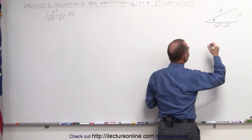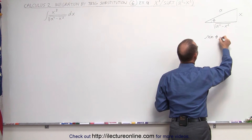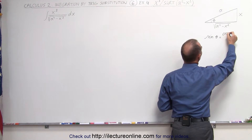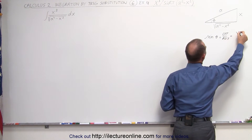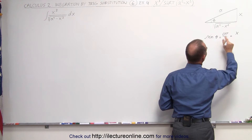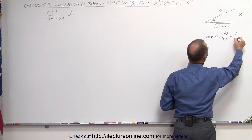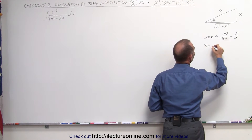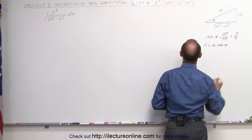Using the identity that the sine of theta is, by definition, the ratio of the opposite side divided by the hypotenuse — the opposite side is x — that would be x over a. We can write x is equal to a times the sine of theta.